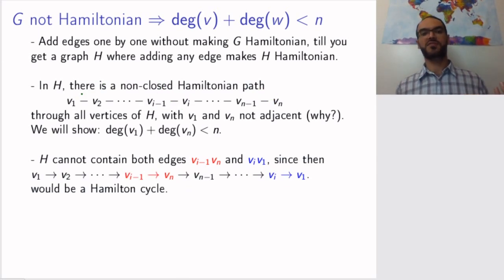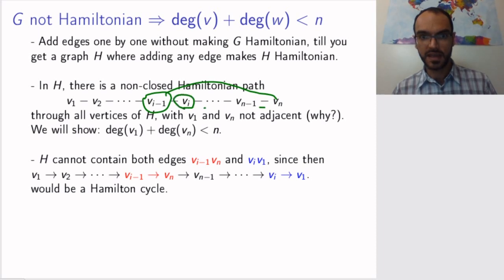You go from v₁ to vᵢ₋₁, then on your edge to vₙ, so on this edge, then back to vᵢ, and then on the supposed edge to v₁. But we said that our graph is not Hamiltonian, so it cannot have such a cycle.